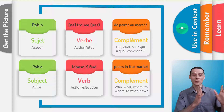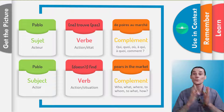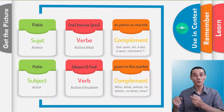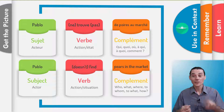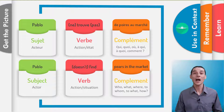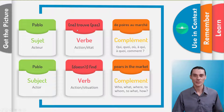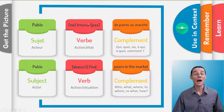We have the first part, which is the subject. The second part, which is the verb — the action or the state of being and the state of mind. And what does that person do? What action is she doing? Who? What? Where? To whom? To what? Or how is she or he doing that? Je répète: Pablo ne trouve pas de poire au marché. I want you to look carefully at how to do the negation — he is not doing that. Il ne trouve pas — he doesn't find it. Ne comes before the verb, and pas comes after the verb. Pablo ne trouve pas de poire au marché.